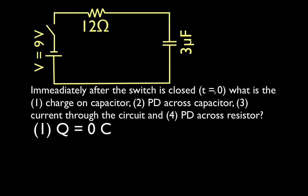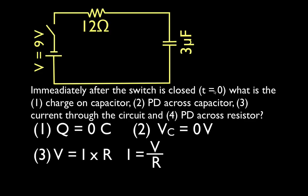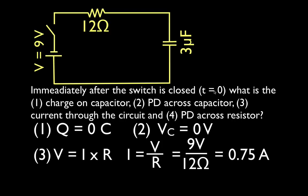Now if the charge on the capacitor is zero and we know Q equals C times V, if we solve for V, we find there is no potential difference across the capacitor — no charge and no potential difference. But current is actually flowing through the circuit; it's just that none of it has reached the capacitor yet. Using I equals V divided by R, we have nine volts and 12 ohms, so the current through the circuit and through the resistor is 0.75 amps. We have current but no charge.